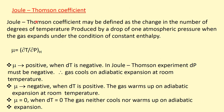Now coming to the Joule-Thomson coefficient. The Joule-Thomson coefficient may be defined as the change in degrees of temperature produced by a drop of one atmospheric pressure when the gas expands under the condition of constant enthalpy. Simply put, the Joule-Thomson coefficient mu equals (∂T/∂P) at constant enthalpy — meaning the change of temperature with respect to pressure at constant enthalpy.